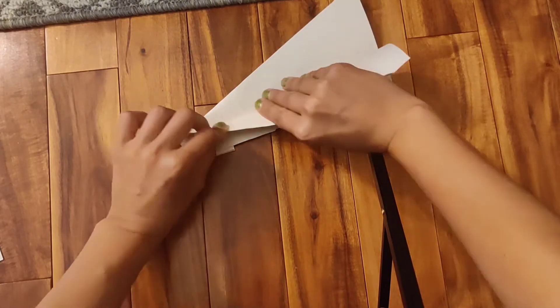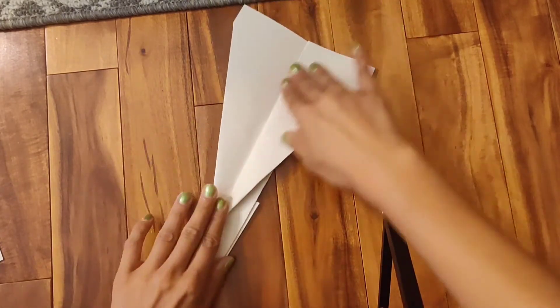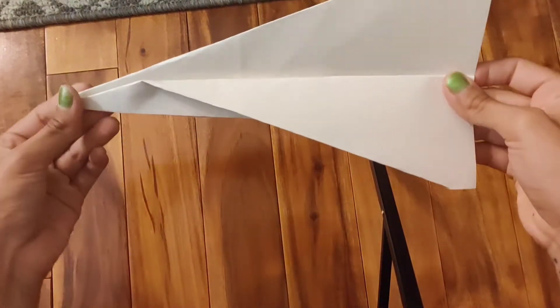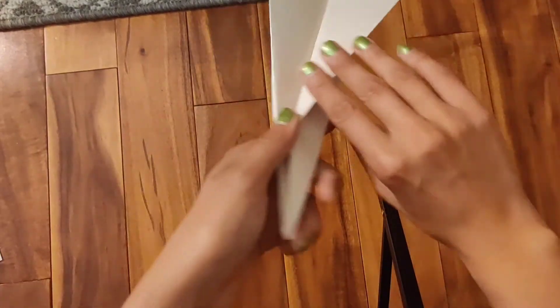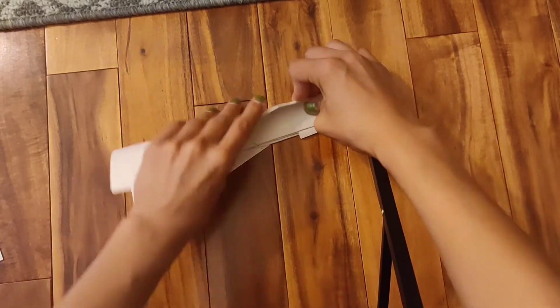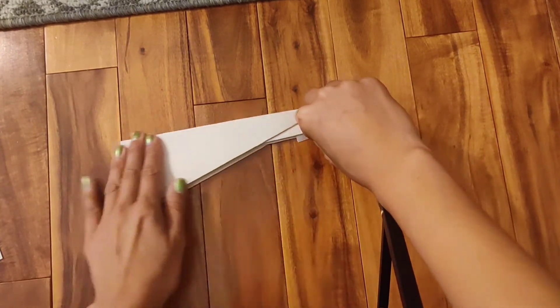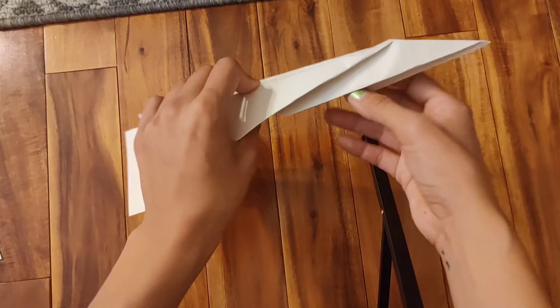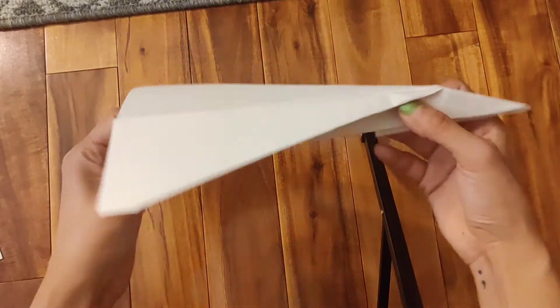So you're going to fold it. You're going to fold them in half just like that, so it has that shape. And then you're going to flip it over and do the same to the other side. Make sure you have a flat surface to help you fold the creases. And here is one paper plane.